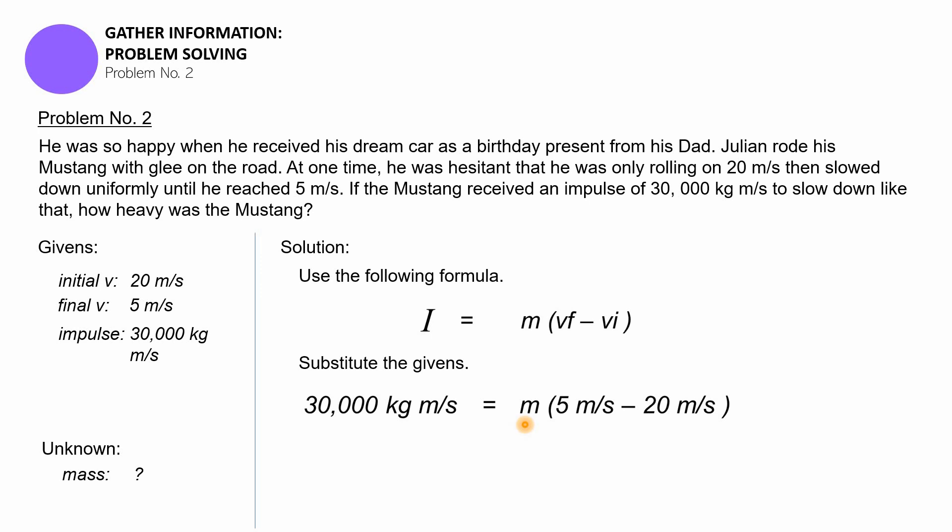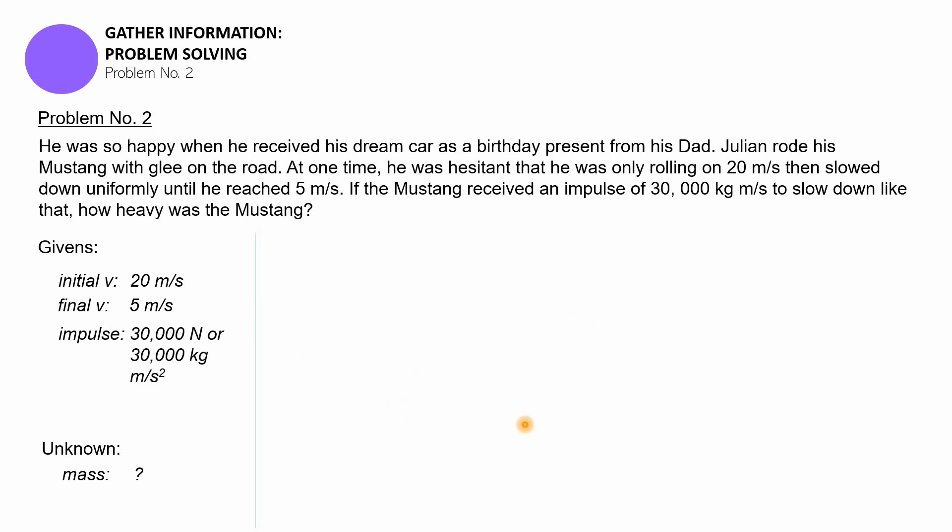The mass we don't know, so we just leave it as m. The final velocity was 5 meters per second, and the initial velocity was 20 meters per second. Now what do you think is going to be the answer? First, we're going to be subtracting 20 from 5.